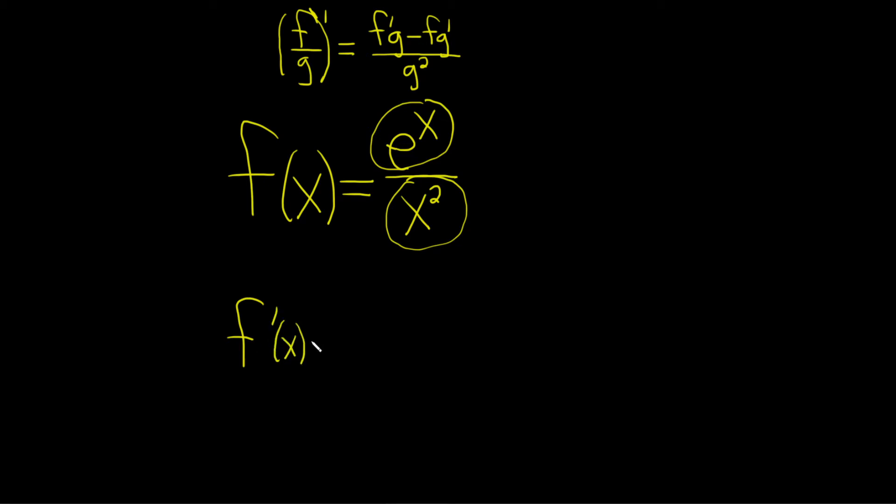So f prime of x is equal to the derivative of the top. The derivative of e to the x is e to the x.